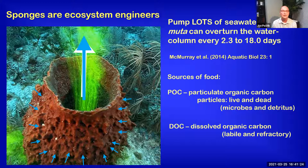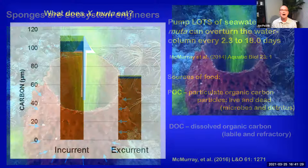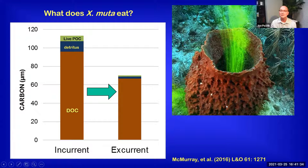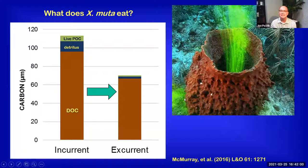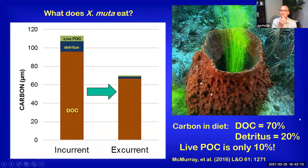Our own studies on sponge feeding using the giant barrel sponge Xestospongia muta as our target organism found that while it eats a lot of living particulate organic carbon and detritus, it also draws down a surprising amount of dissolved organic carbon from the water passing through the sponge to the water coming out through the osculum. We can sample right next to the wall of the sponge and right down the throat of the sponge. What we discovered is that dissolved organic carbon makes up 70% of the overall diet of the sponge, detritus 20%, while live particulate organic carbon is only 10%. This is huge because generally people think of sponges as being particle feeders — in fact, these sponges are mainly consuming dissolved organic carbon.